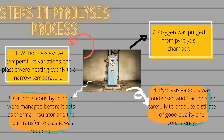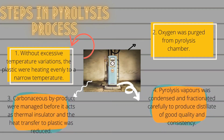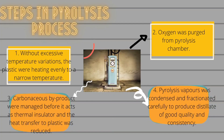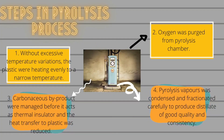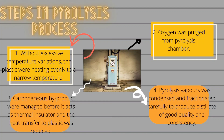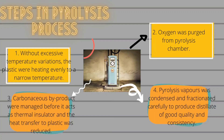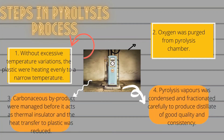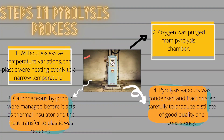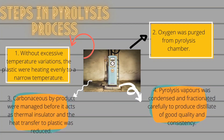Steps in the pyrolysis process: 1. Without excessive temperature variation, the plastic was heated evenly to a narrow temperature. 2. Oxygen was purged from the pyrolysis chamber. 3. Carbonaceous by-products were managed before they act as thermal insulators and reduce heat transfer to the plastic. 4. Pyrolysis vapor was condensed and fractionated properly to produce distillate of good quality and consistency.